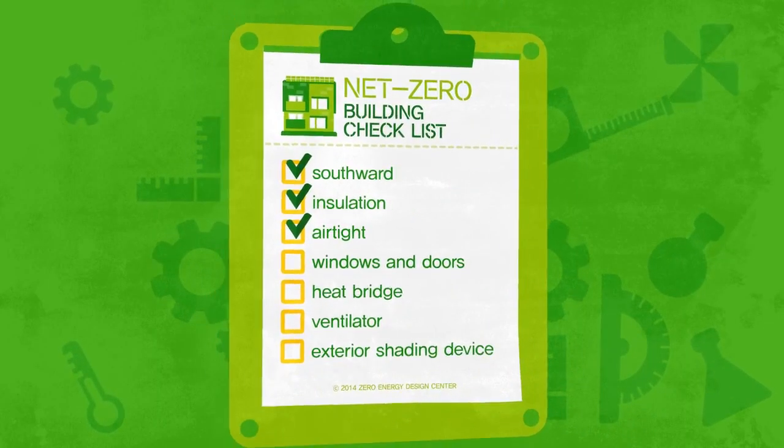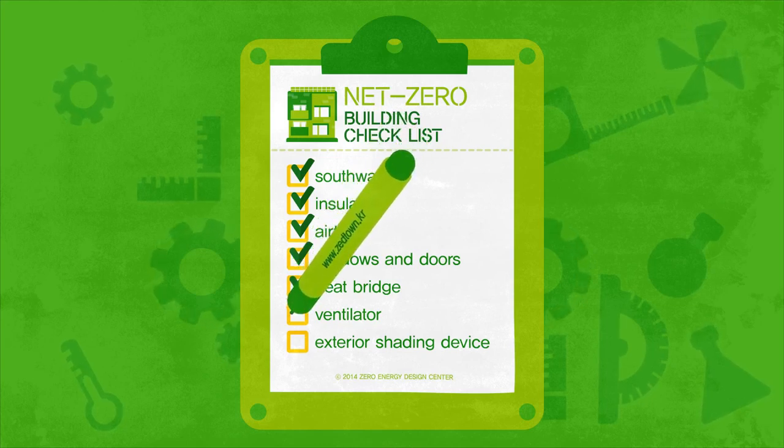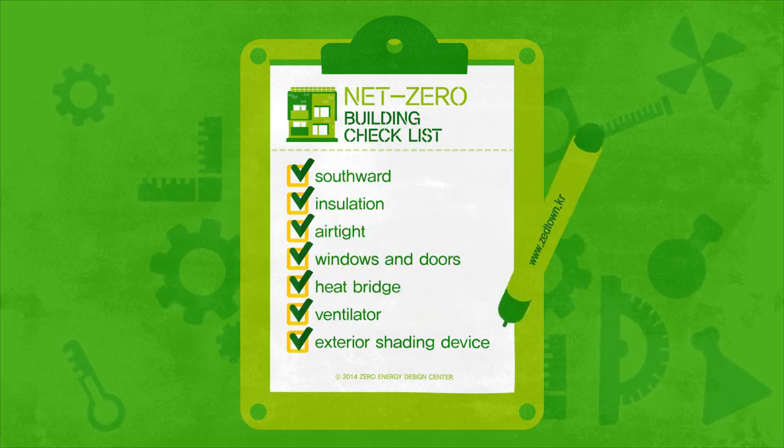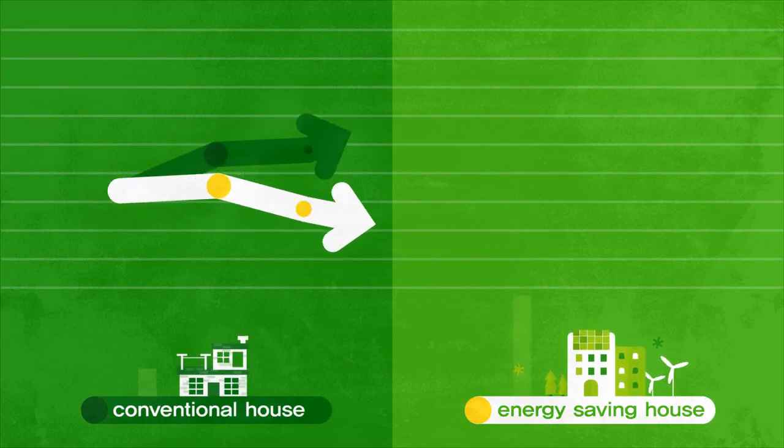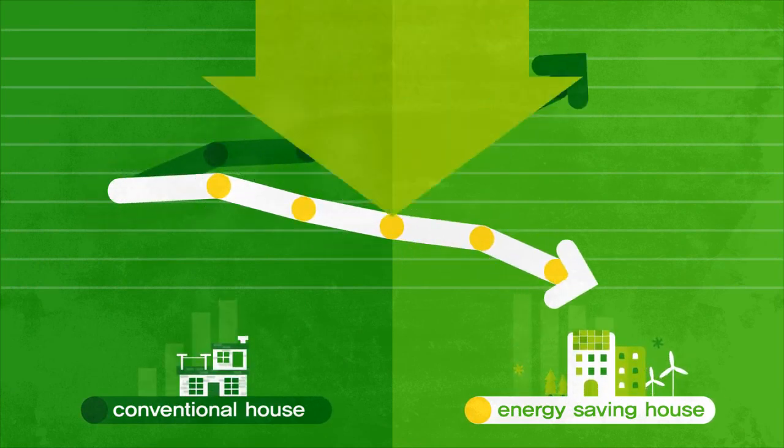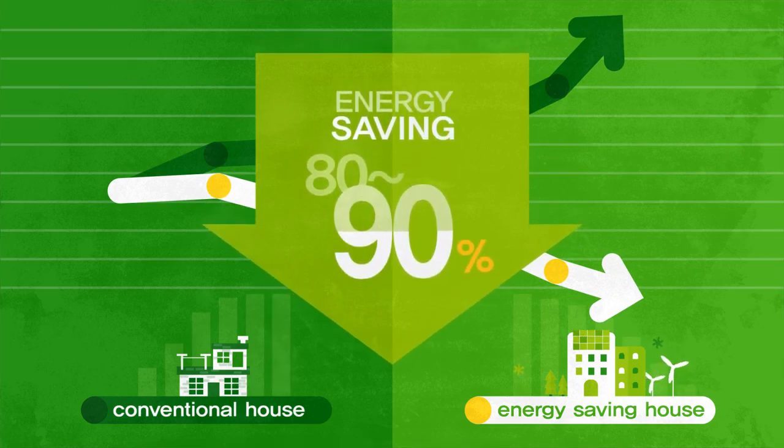In order to lower the energy consumption, we need to consider many energy saving techniques from the design standpoint. Low energy consuming houses designed with such consideration will be able to reduce the heating and cooling energy by 80 to 90 percent in comparison to a conventional house.